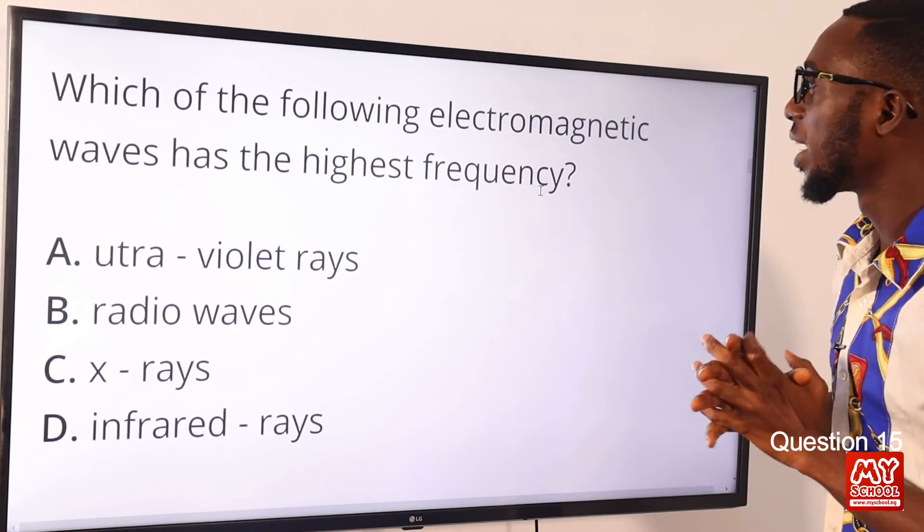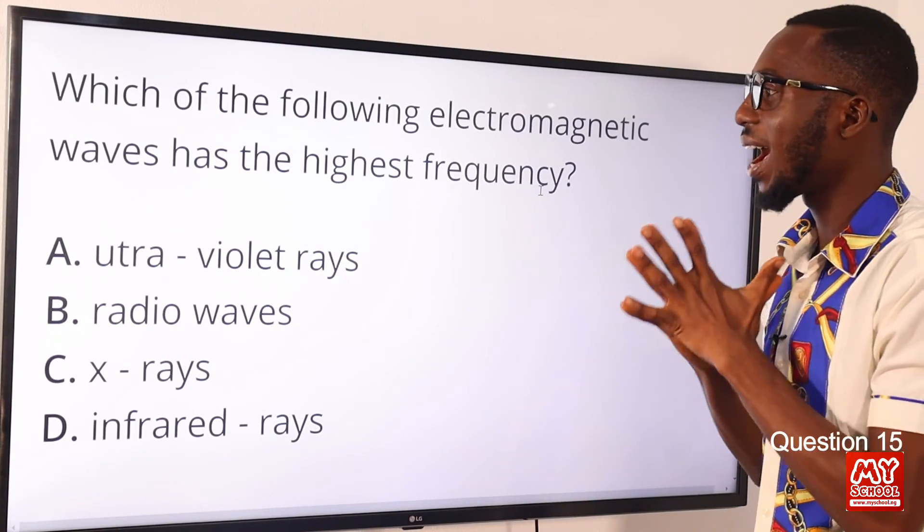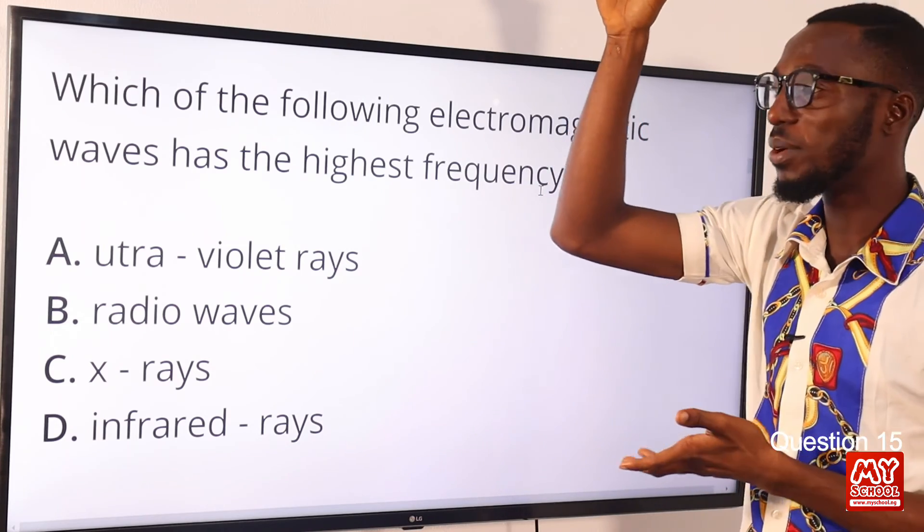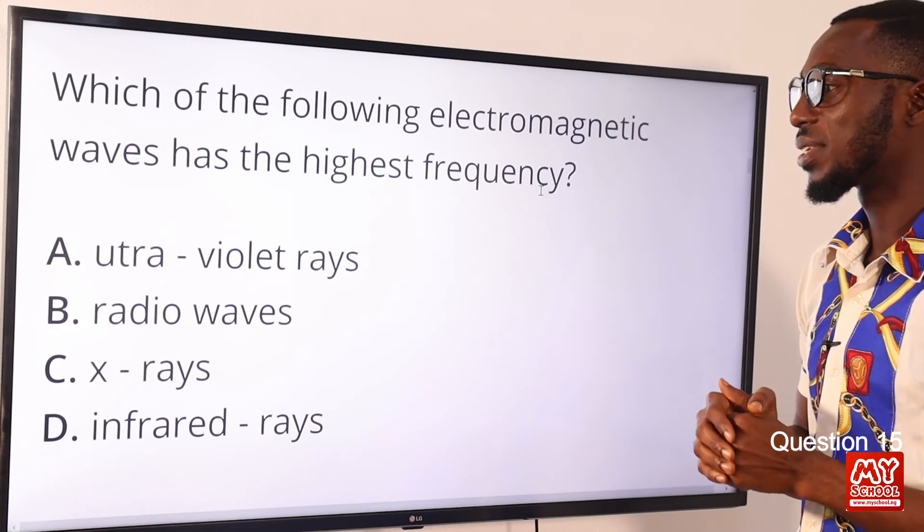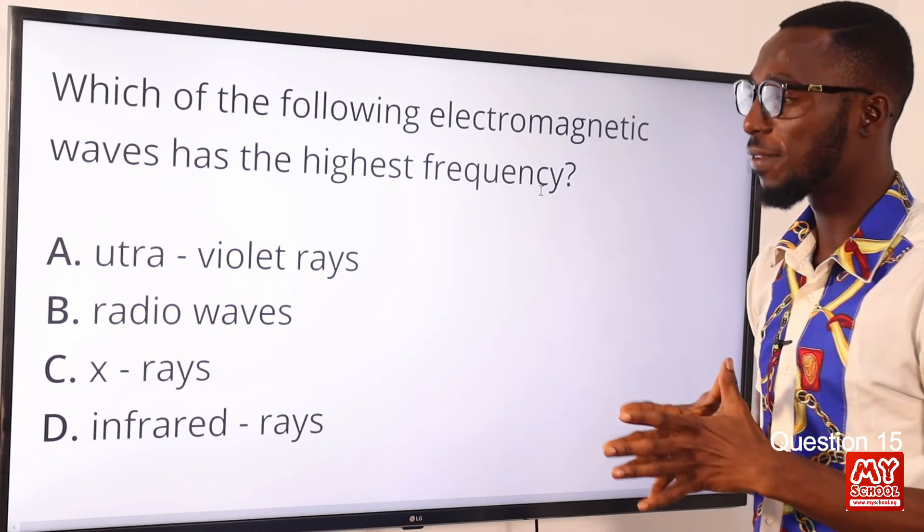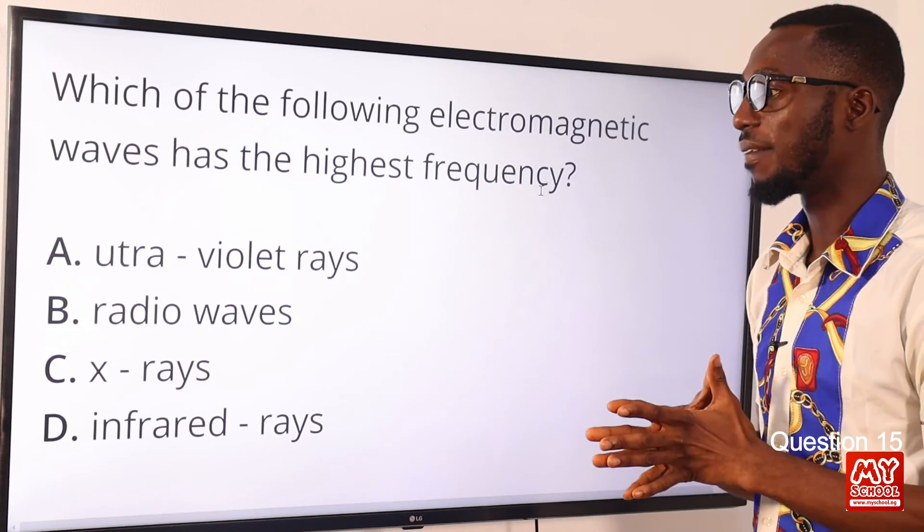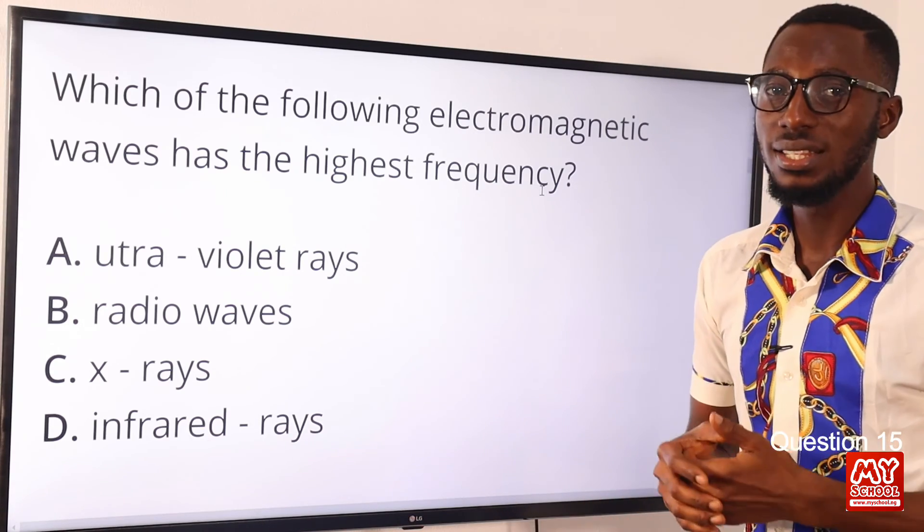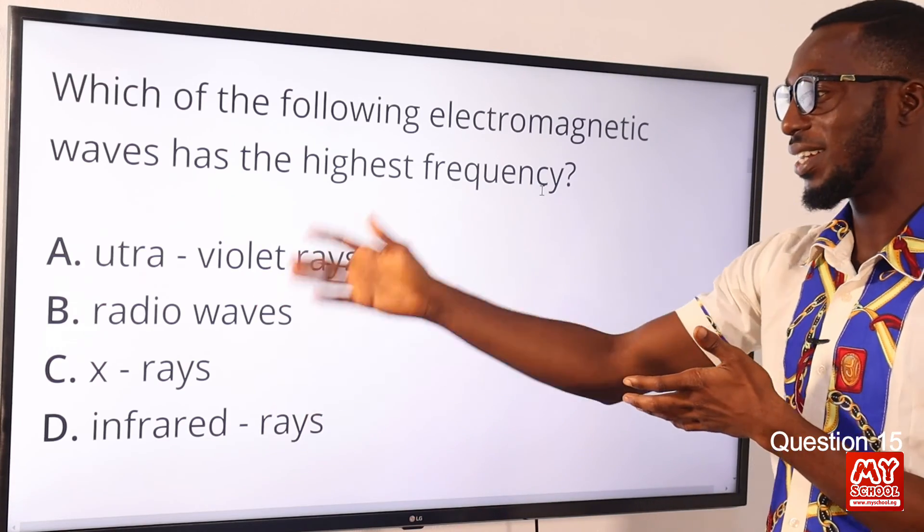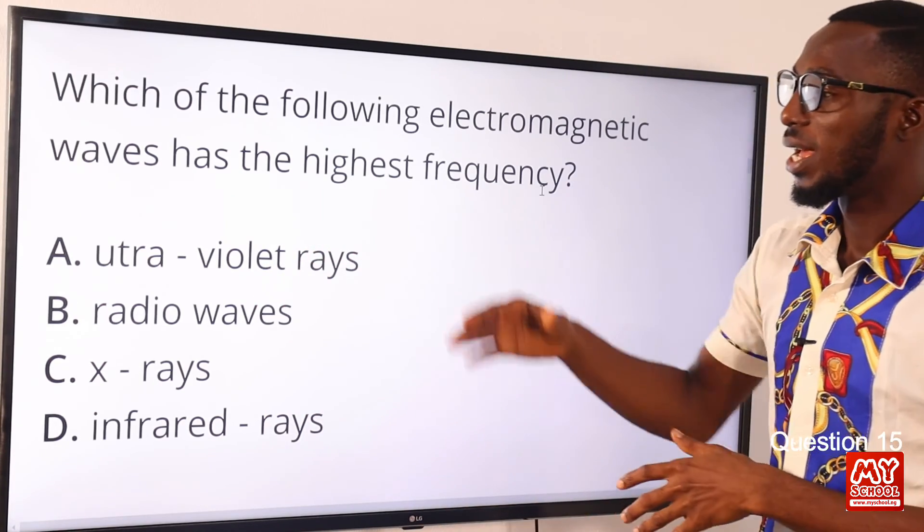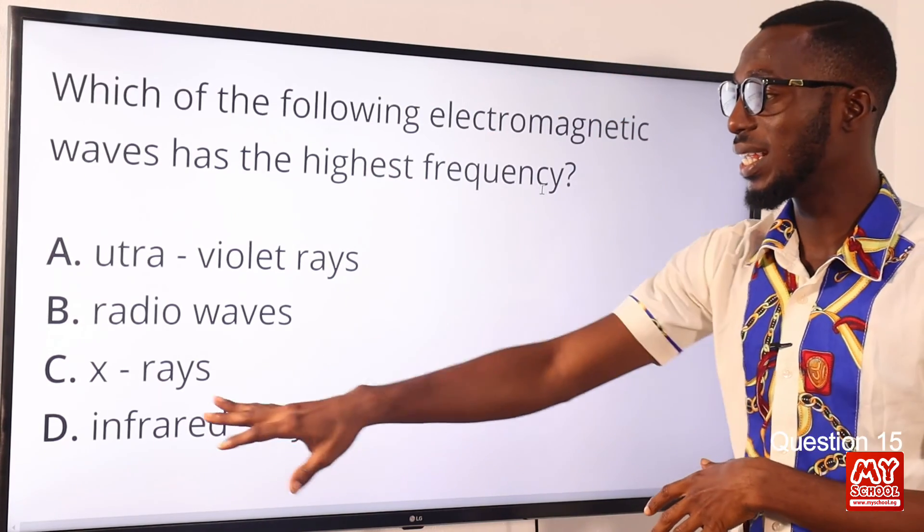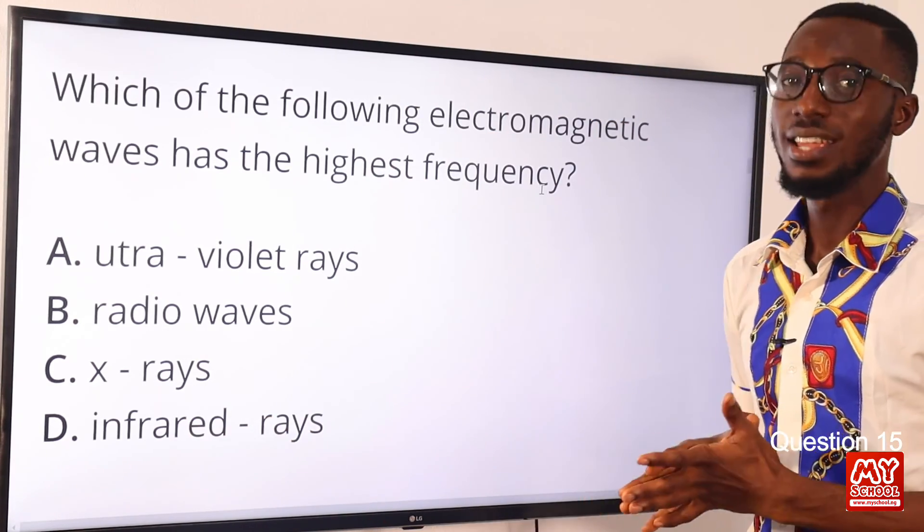Question 15. Which of the following electromagnetic waves has the highest frequency? So I am going to arrange this frequency from the lowest starting from the lowest down to the highest. So we are going to start, the lowest frequency here is radio waves followed by infrared, followed by visible light, followed by ultraviolet, then we have x-ray and gamma ray. So x-ray is the highest here at least for what we have provided. So the wave that has the highest frequency based on the options here is x-ray. So option C is the correct option.